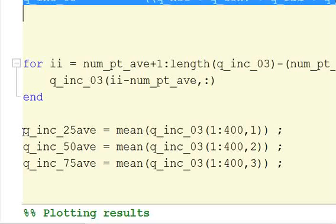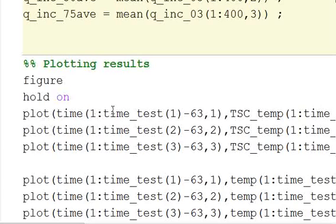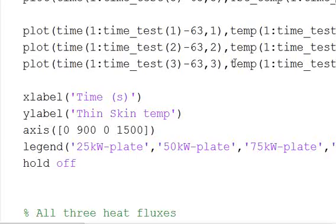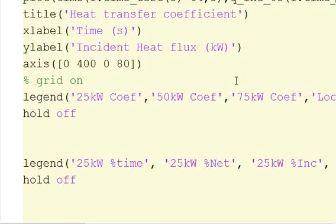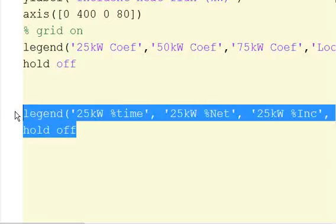And then we're going to calculate the averages here, and then we're going to plot. So we're going to plot the surface temperature and the substrate temperature, and then the incident heat flux for all three calibration terms. And we just have our legend, actually this is from an old plot.